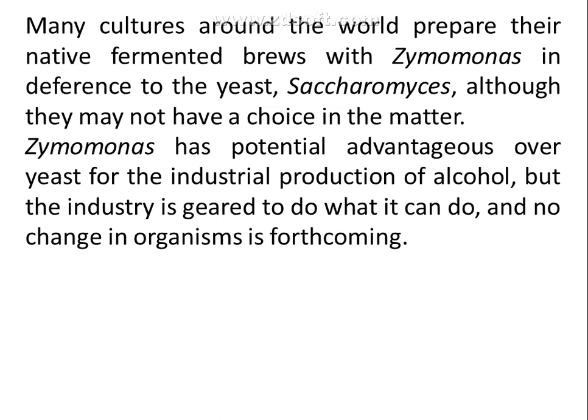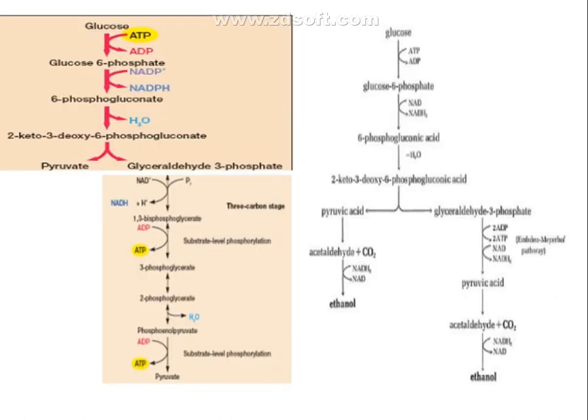Many cultures around the world prepare their native fermented brews using Zymomonas instead of Saccharomyces. The reason is that you get double the quantity of ethanol production, because two molecules of ethanol are obtained from one glucose molecule. Even though Zymomonas has potential advantages over yeast for industrial alcohol production, industry usually relies on Saccharomyces. Only a few producers worldwide use Zymomonas, but in Mexico, Zymomonas species are used for the fermentation process.